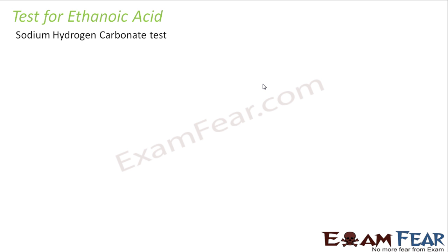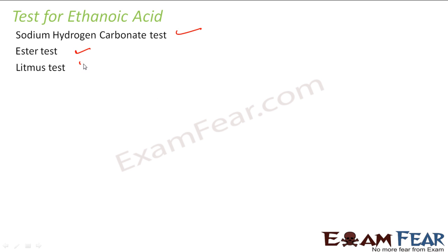We have three tests for ethanoic acid: the sodium hydrogen carbonate test, the ester test, and the litmus test. With litmus it shows acidic behavior. With alcohol it gives an ester. With carbonates it gives CO2 gas.